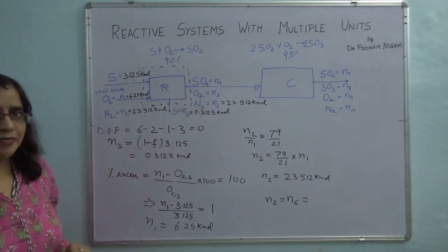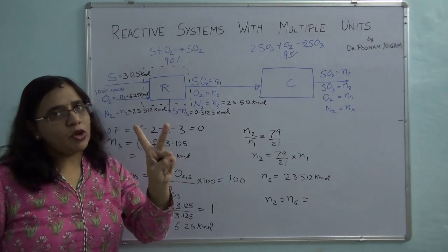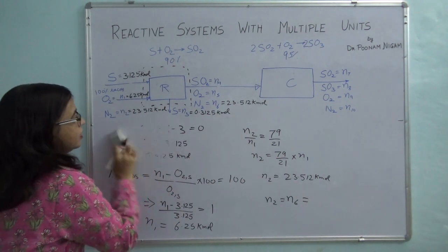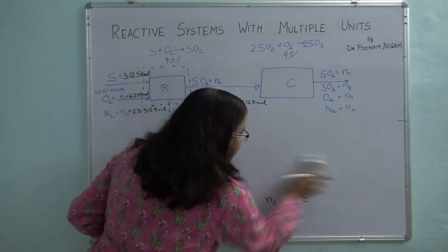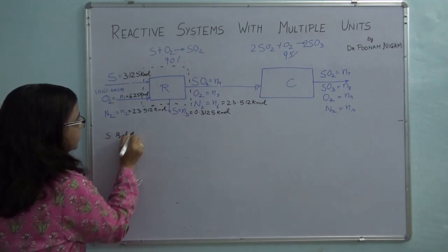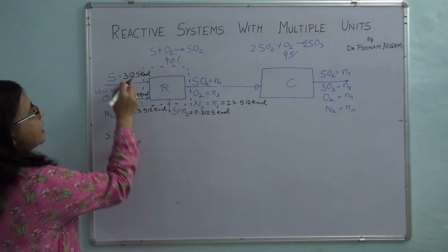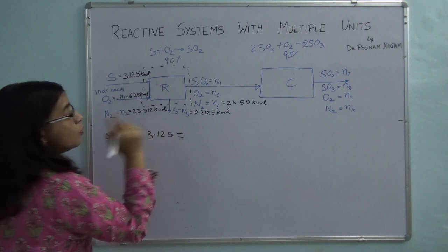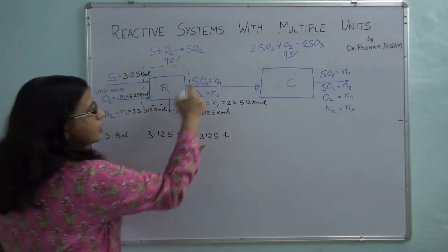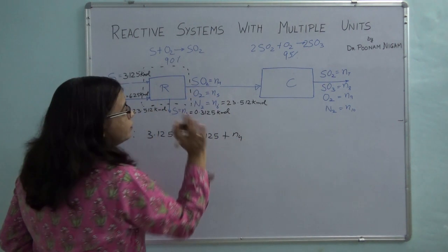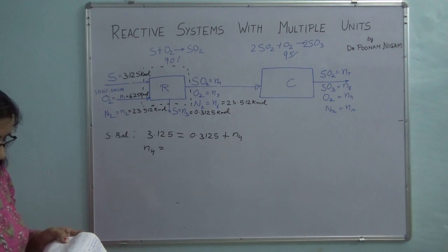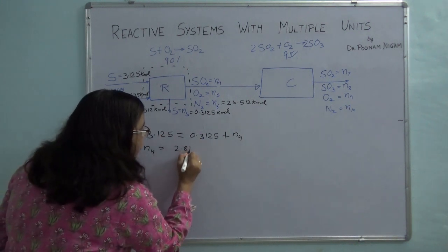Now only two variables remain and I have two independent atomic species balances left. Taking the sulfur balance first: sulfur going in is 3.125 kilomoles, and coming out is N3 (0.3125 kilomoles) plus N4. Solving this gives N4 = 3.125 − 0.3125 = 2.8125 kilomoles of sulfur dioxide leaving the reactor.